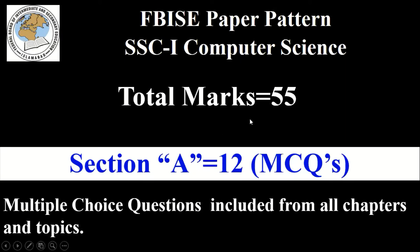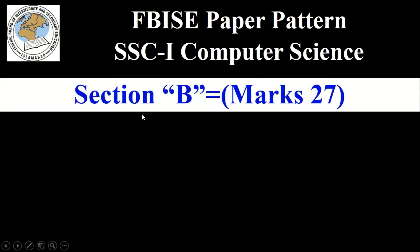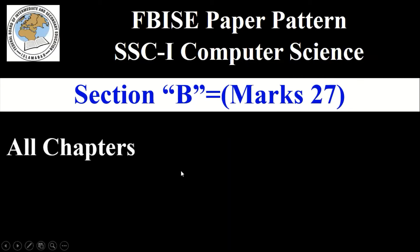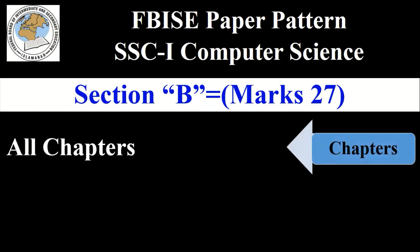Now let's move towards the next section of the computer science SSC 1 paper pattern, which is Section B. Section B has 27 marks and covers all chapters. There is no restriction on chapters, so all chapters have short questions included in Section B.